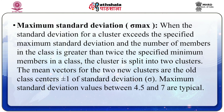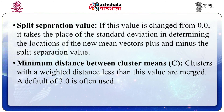Maximum standard deviation, sigma max: when the standard deviation for a cluster exceeds the specified maximum and the number of members is greater than twice the specified minimum, the cluster is split into two clusters. The mean vectors for the two new clusters are the old class center plus or minus one standard deviation. Typical maximum standard deviation values lie between 4.5 and 7. Split separation value: if changed from 0, it replaces the standard deviation in determining the location of the new mean vectors, placed at plus and minus the split separation value. Minimum distance between clusters: clusters with a weighted distance less than this value are merged — a default of 3 is often used, as shown in figure number 7.